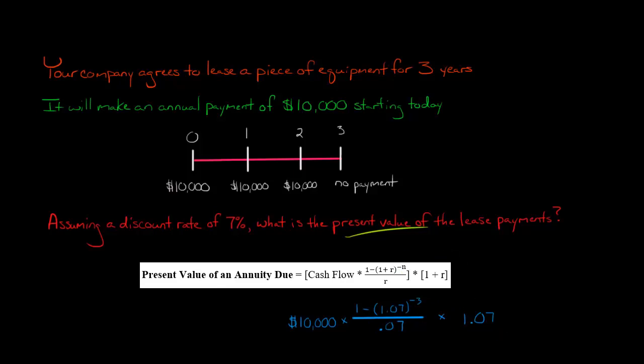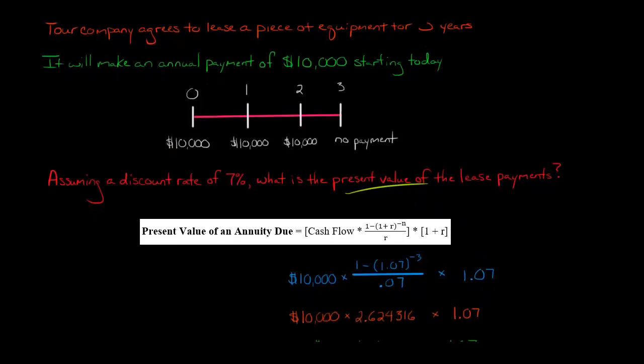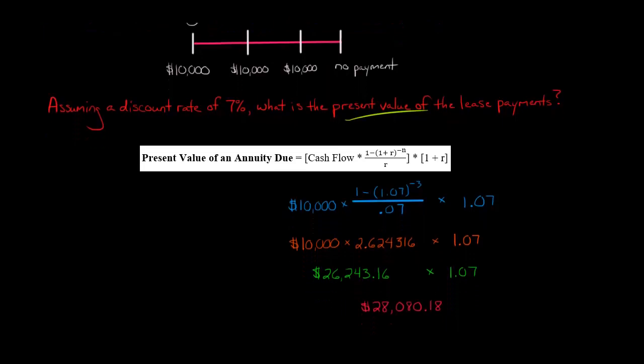Then times 1 plus r, which is 1.07. Multiplying this out, you get 2.624316 times 10,000 times 1.07. This component, $26,243.16, is actually what the present value of an ordinary annuity would be.